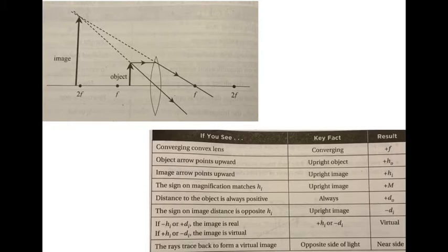This creates an upright image, which is a virtual image that cannot be projected onto a screen. The formulas used previously remain the same. However, the signs on the upright image height and image distance reverse when the object moves inside the focal point.